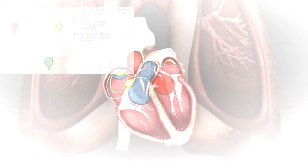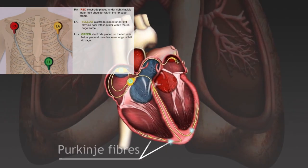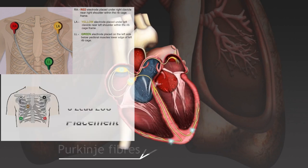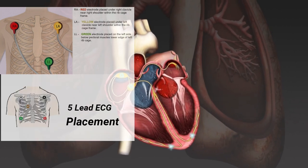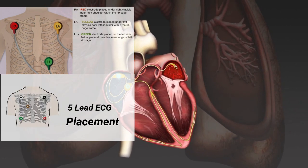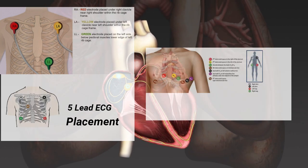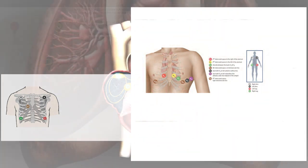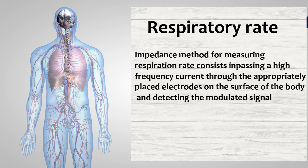ECG signals can be recorded by 3-lead ECG cables, 5-lead ECG cables or 10-lead ECG cables. You can also measure heart rate and respiration rate along with it.